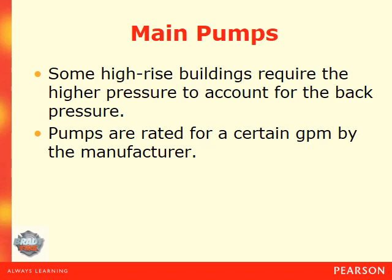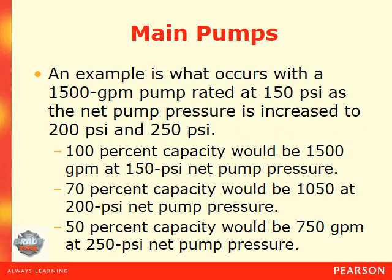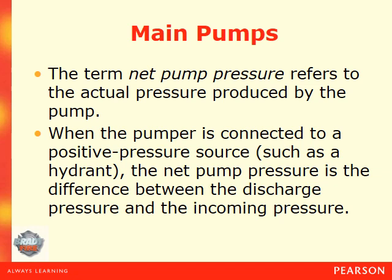Pumps are rated for a certain GPM by the manufacturer, into three different pressures. Their capacity test is at 150 psi where the pump will pump its maximum gallons per minute. Then you have 70% of capacity at 200 psi and 50% capacity at 250 psi. For example, with a 1,500 gallon per minute pump rated at 150 psi: 100% capacity would be 1,500 GPM at 150 psi net pump pressure; 70% capacity would be 1,050 GPM at 200 psi; and 50% capacity would be 750 GPM at 250 psi net pump pressure.